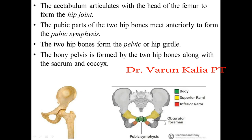The pubic parts of the two hip bones meet anteriorly to form the pubic symphysis. The two hip bones form the pelvis and the hip girdle, along with the sacrum and coccyx.